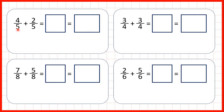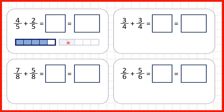First we have four-fifths — four parts out of five on our fraction bar — and we're adding two-fifths, so that's two parts out of five. You can see that adding is putting things together, and all together we have six-fifths, because each of these is one-fifth and we have six parts.